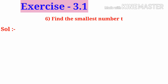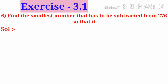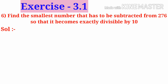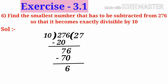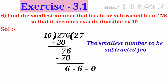Sixth problem: Find the smallest number that has to be subtracted from 276 so that it becomes exactly divisible by 10. Let us divide 276 by 10. We get a remainder of 6. In order to get remainder 0, 6 must be subtracted from 6. So the smallest number to be subtracted from 276 is 6.